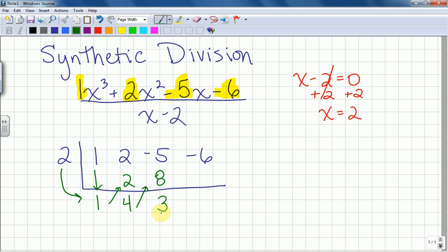Again, number in the bottom row, I have to multiply it by the 2. 2 times 3 gives me 6. That goes up inside here. And then, now that I have two numbers in a column inside the problem, I add them. Negative 6 plus 6 gives me 0.